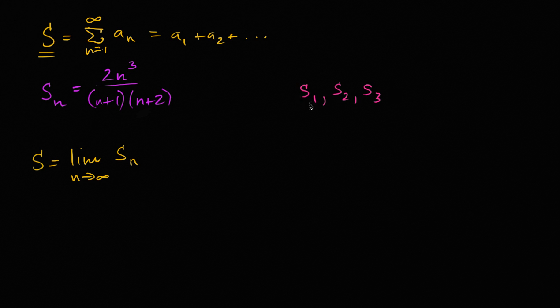So this would be the sum of the first term. This would be the sum of the first two terms. This would be the sum of the first three terms. And just think about, what happens to the sequence as n approaches infinity? Because that's what the series is. It's the sum of the first infinite terms. It's the sum of all, you have an infinite number of terms here.